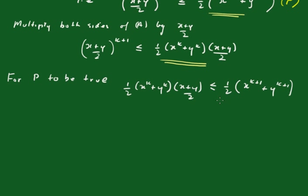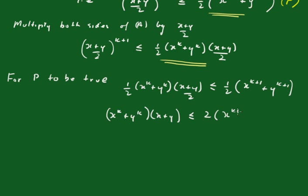We can tidy this up: it suffices to show that (x to the k plus y to the k) times (x plus y) is less than or equal to 2 times (x to the k plus 1 plus y to the k plus 1), which rearranges to x to the k plus 1 plus y to the k plus 1 minus x to the k times y minus y to the k times x is greater than or equal to 0.